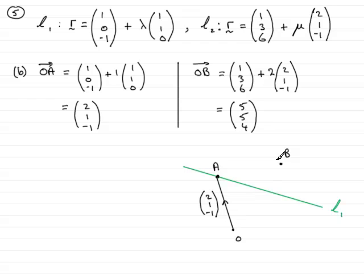And O to B, B's on the other line L2. So I don't really need to draw L2 in, but B is not on the line L1, so we'll just place B over here somewhere. There's the point B. O to B then, from O to B, is the vector (5, 5, 4). So I'll mark that in: 5, 5, 4. And we've got to work out the cosine of the acute angle between AB and the line L1.